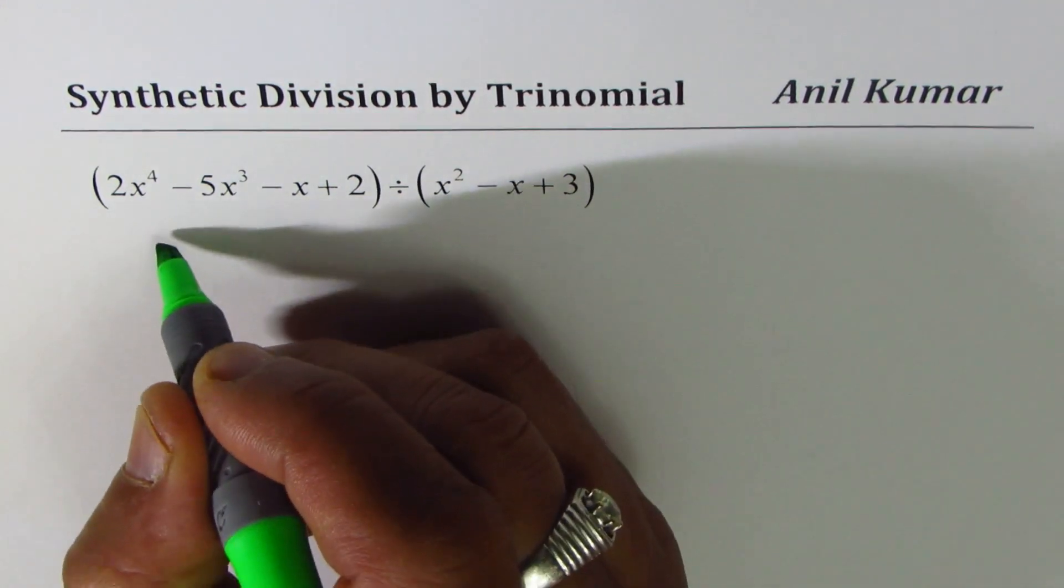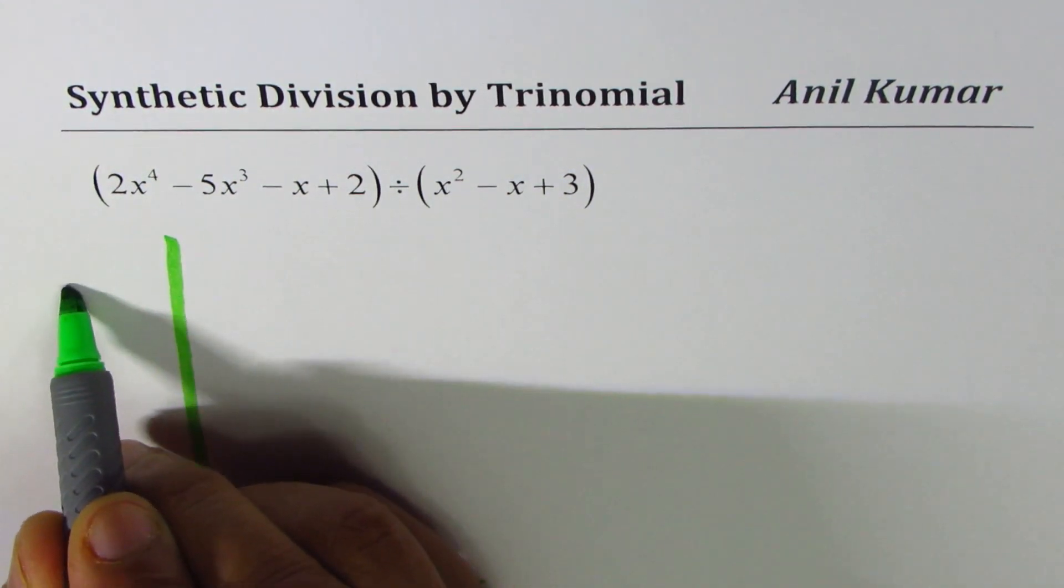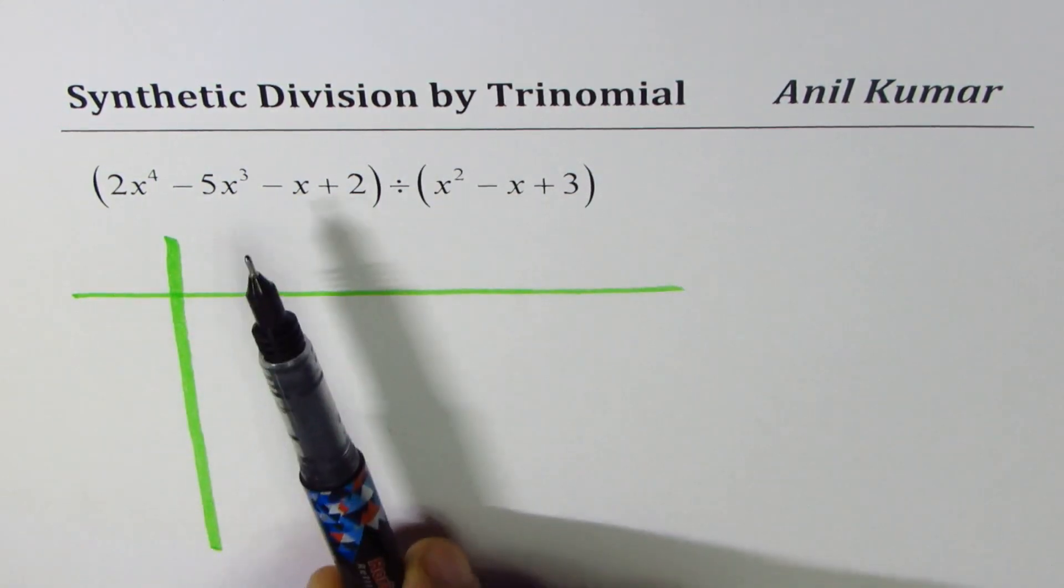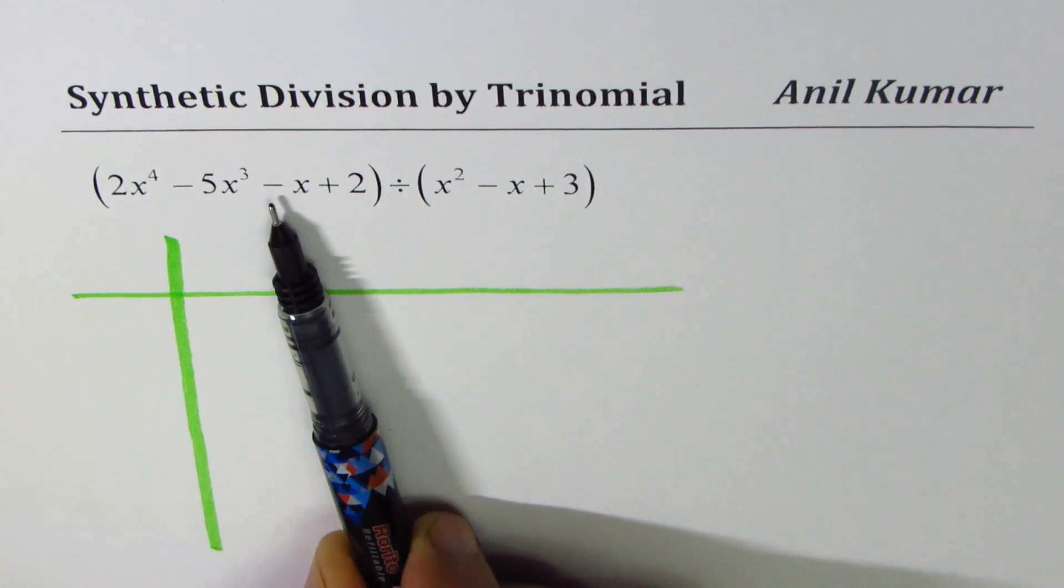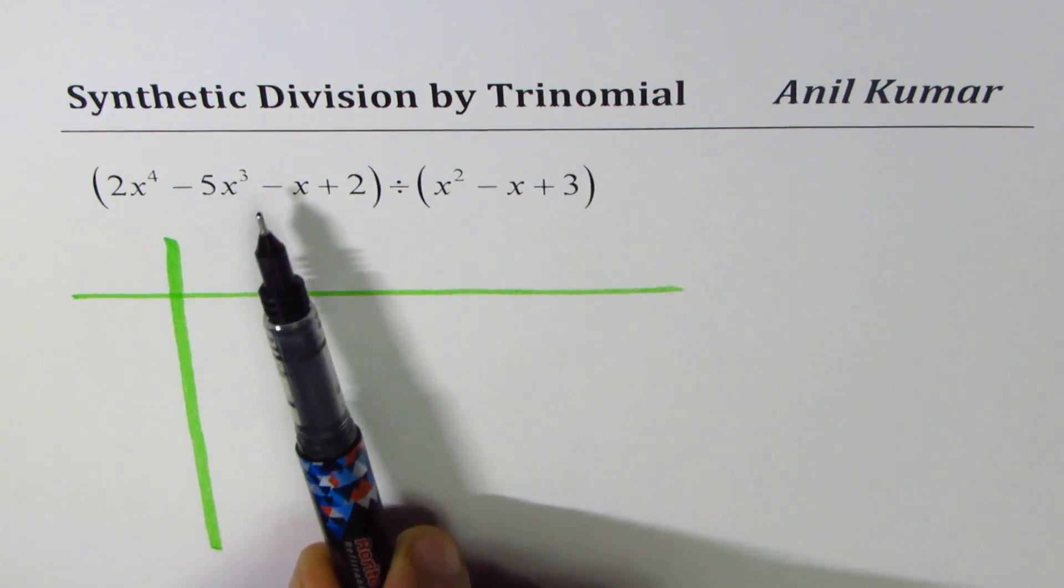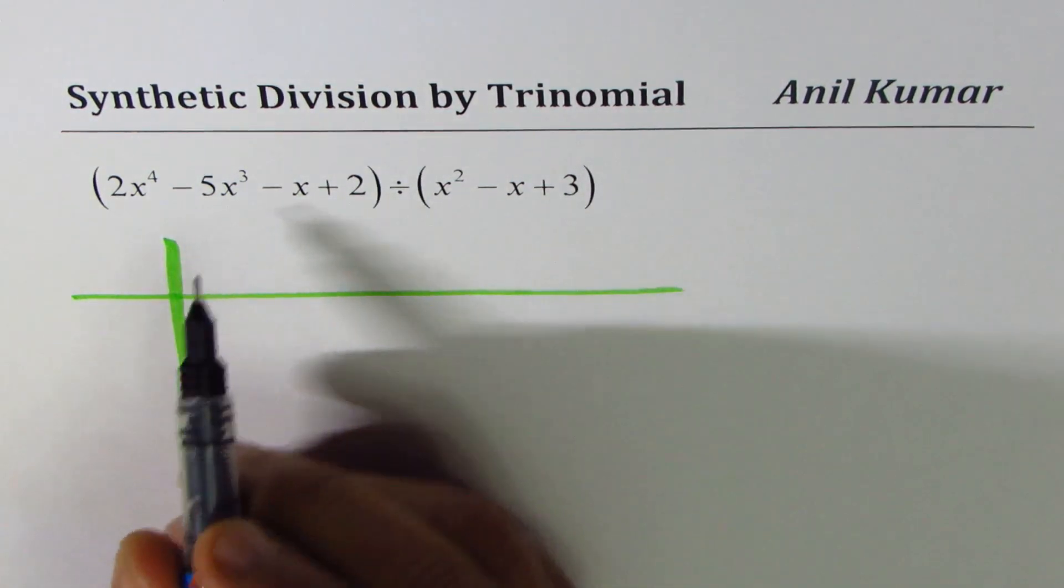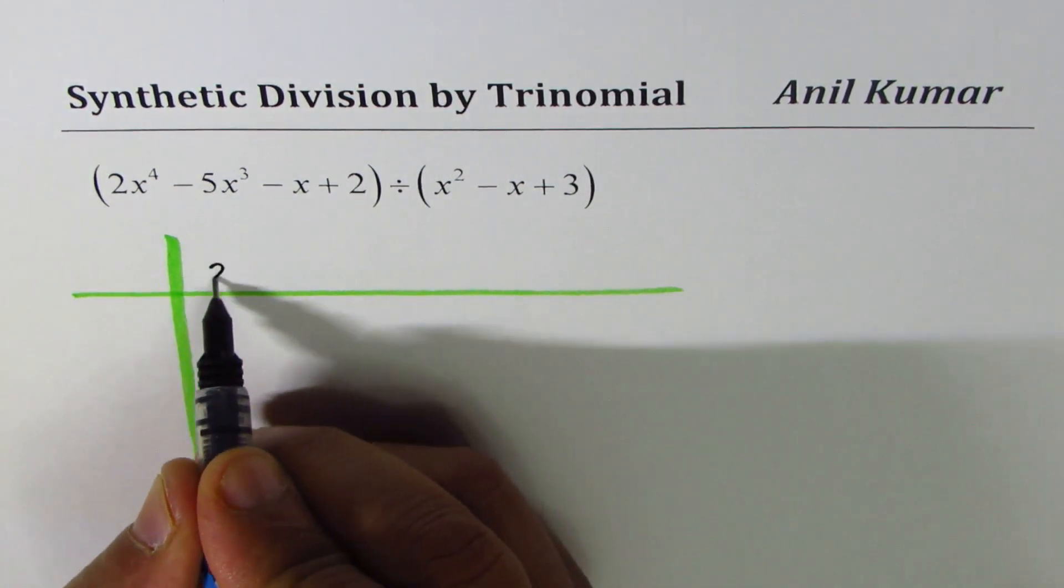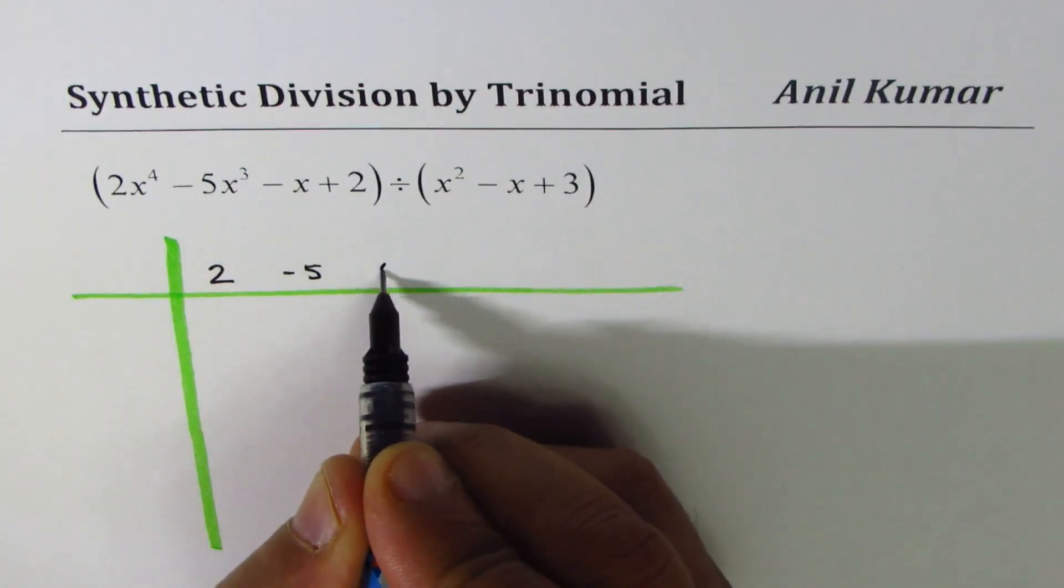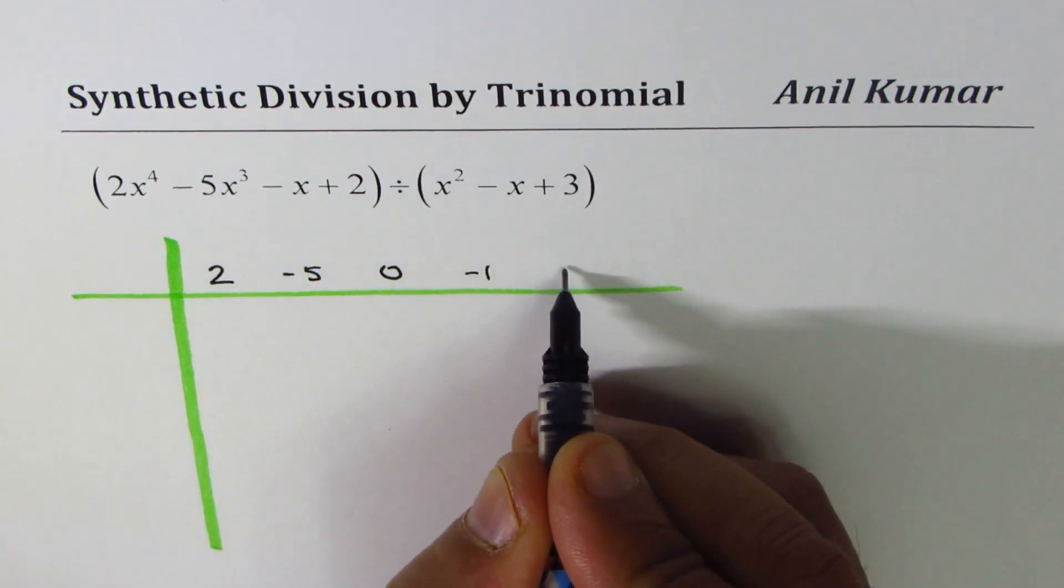We'll follow the same process as we do for synthetic division. We'll first write down all the coefficients of the polynomial. The missing coefficients will be replaced by placeholders, zeros. 2x to the power 4, minus 5x cubed, x squared term is missing, so we'll replace that by 0. Let's write down the coefficients: 2 for x to the power 4, minus 5, and 0 for x squared. Minus 1 for x and 2 for the constant.